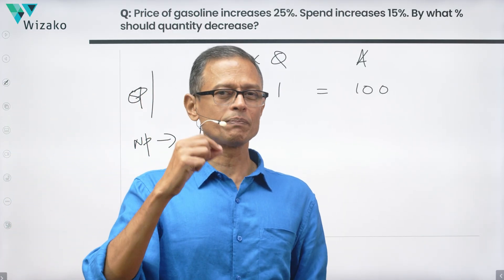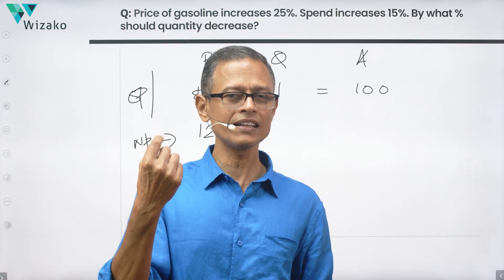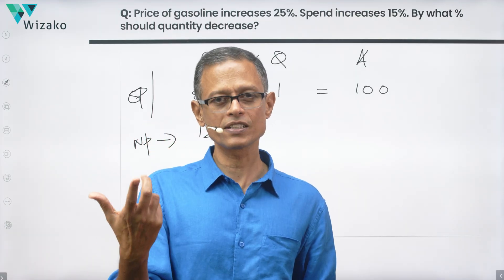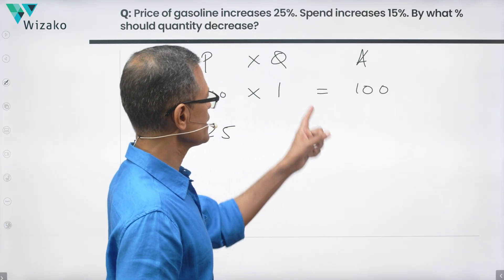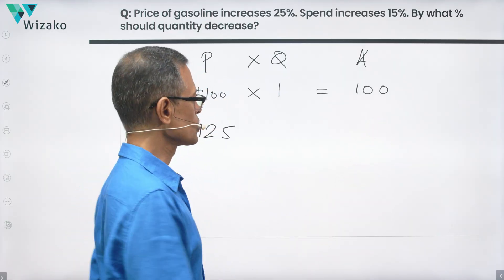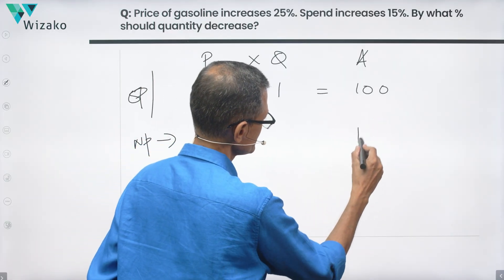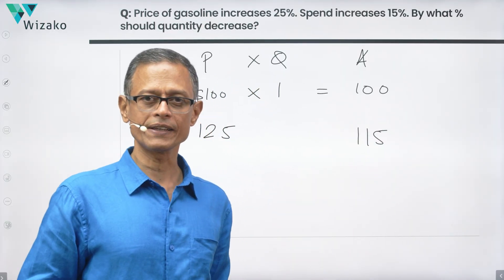How much is he willing to spend additionally? He is willing to spend an additional 15% more than what he did. Earlier he spent $100, and 15% more than $100 means he is willing to spend only $115.